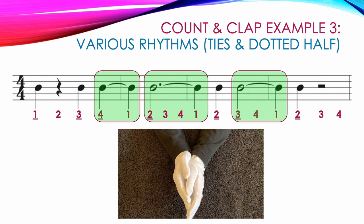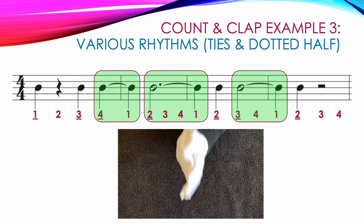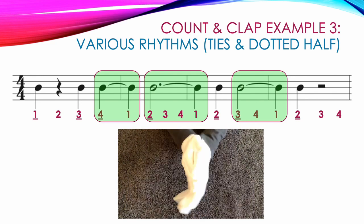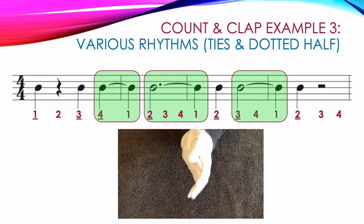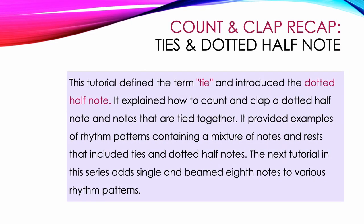Here's a video showing the correct way to count and clap example number three: one, two, three, four, one, two, three, four, one, two, three, four. This tutorial defined the term tie and introduced the dotted half note. It explained how to count and clap a dotted half note and notes that are tied together, and provided examples of rhythm patterns containing a mixture of notes and rests that included ties and dotted half notes. The next tutorial in this series adds single and beamed eighth notes to various rhythm patterns.